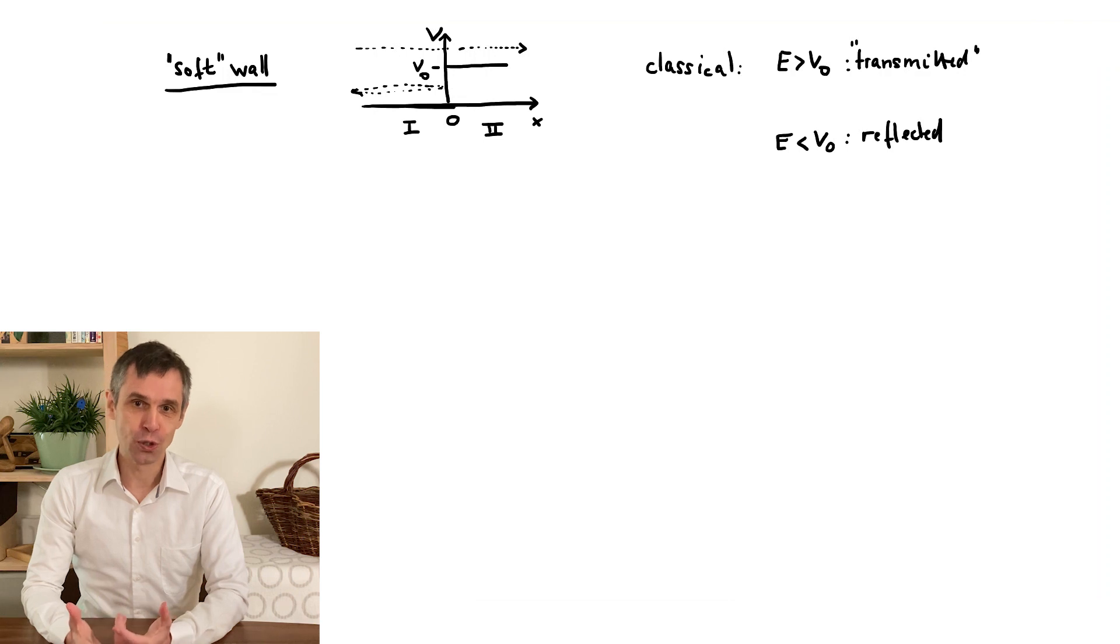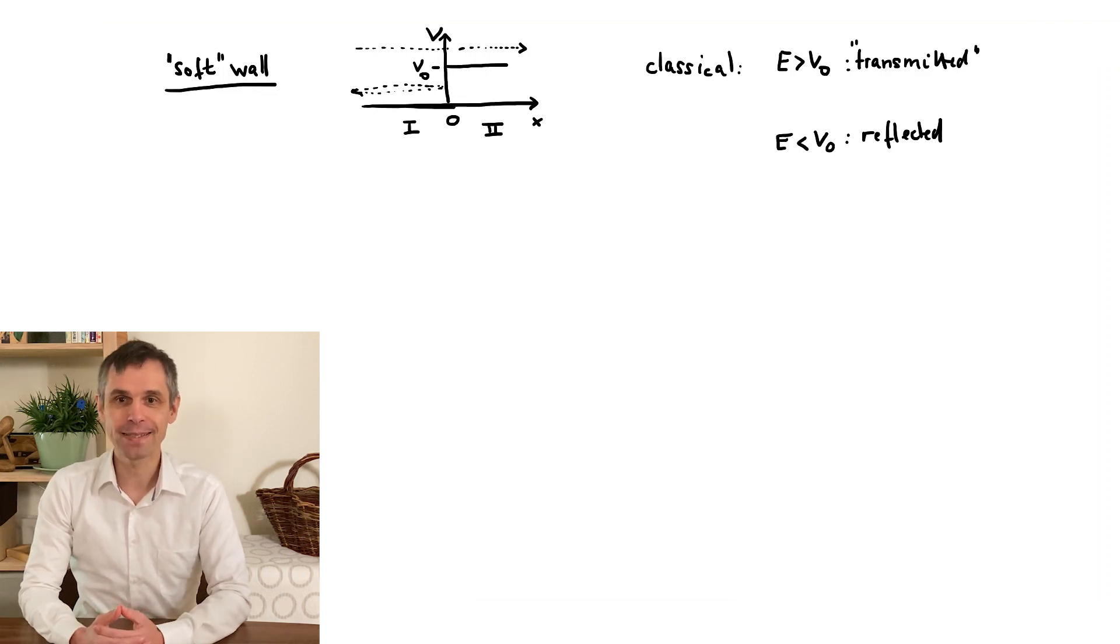Now, as it moves into the region of the wall, the precise value of the potential energy in there actually matters. Namely, it reduces the kinetic energy available to the particle so that it moves more slowly, with correspondingly reduced momentum or velocity.